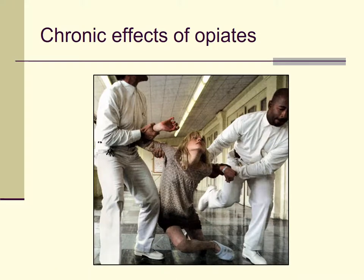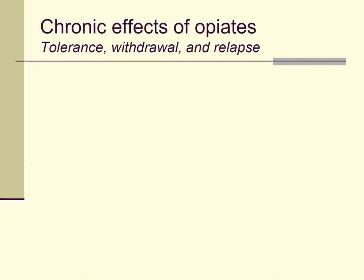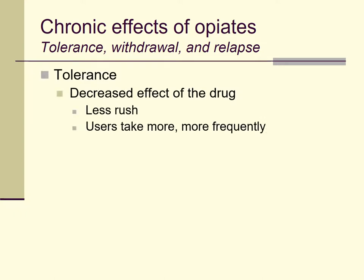Let's talk about the chronic effects of opiates. Part of the picture involves tolerance — with repeated use at the same level, there's a decreased effect from a given dose. In the case of opiates, people experience a lot less of a rush, so that orgasmic pleasure goes away. People describe trying to chase that feeling — sometimes called 'chasing the dragon' — which can motivate them to use more of the drug than they initially began with.